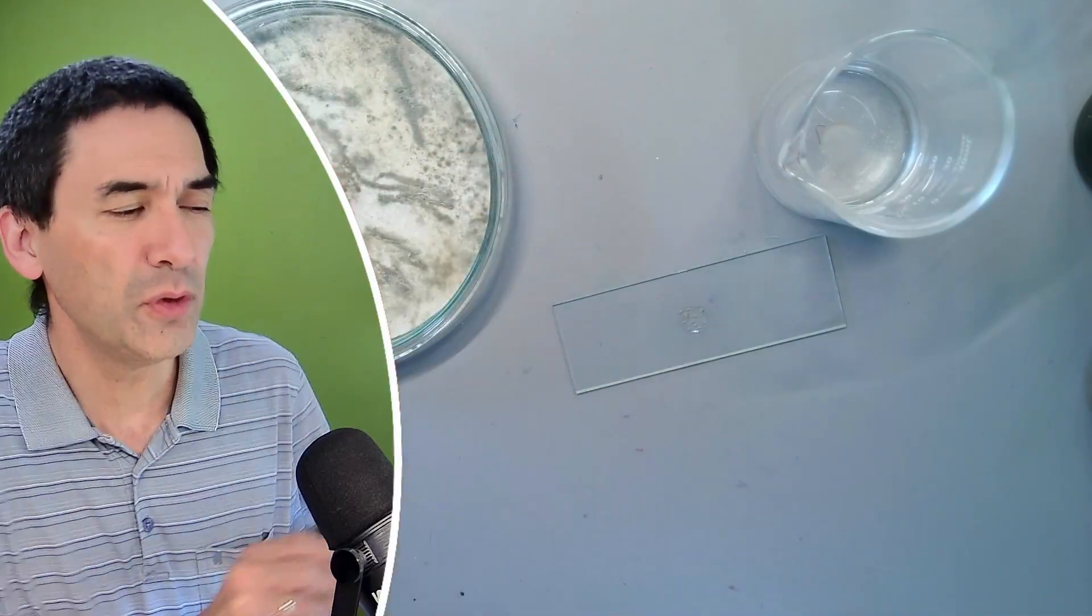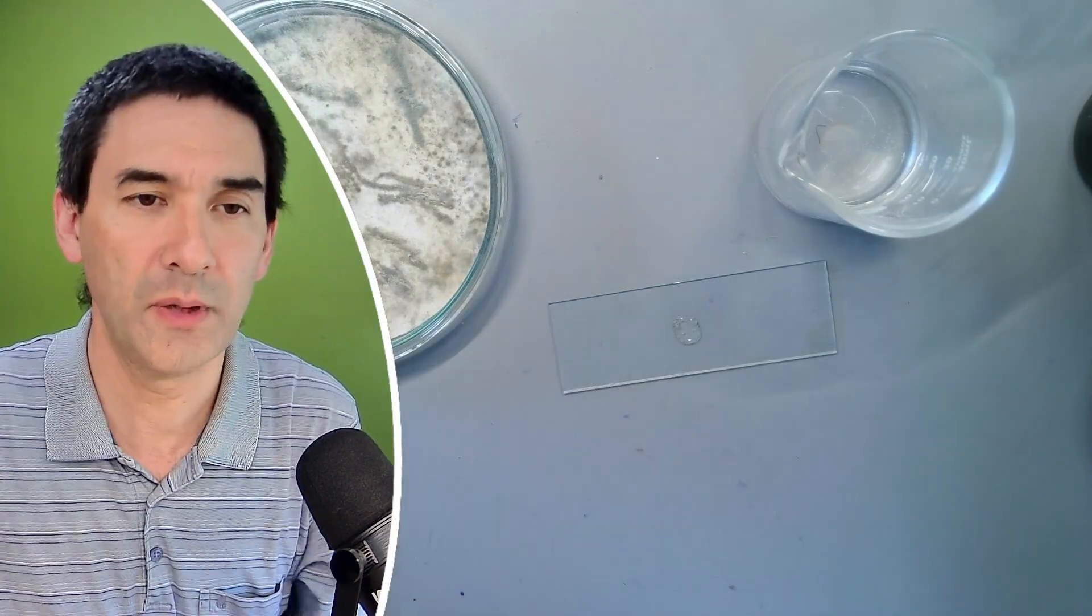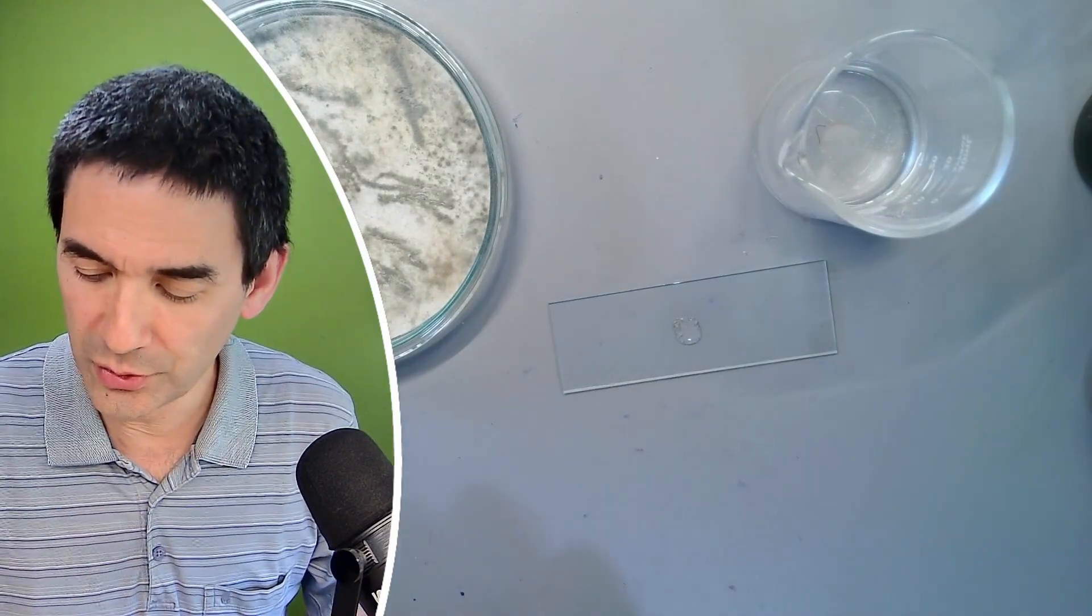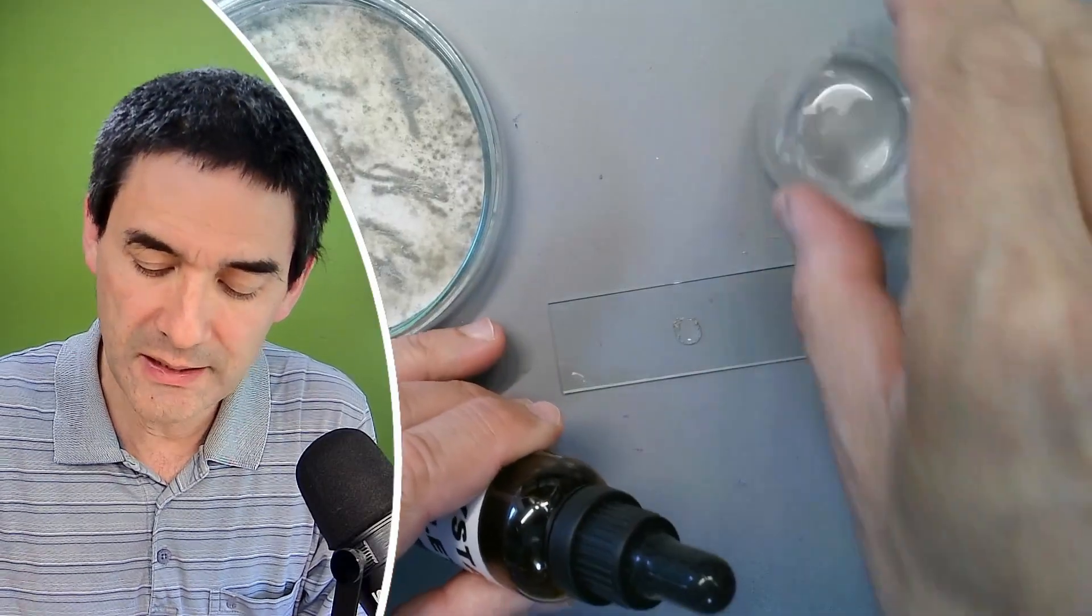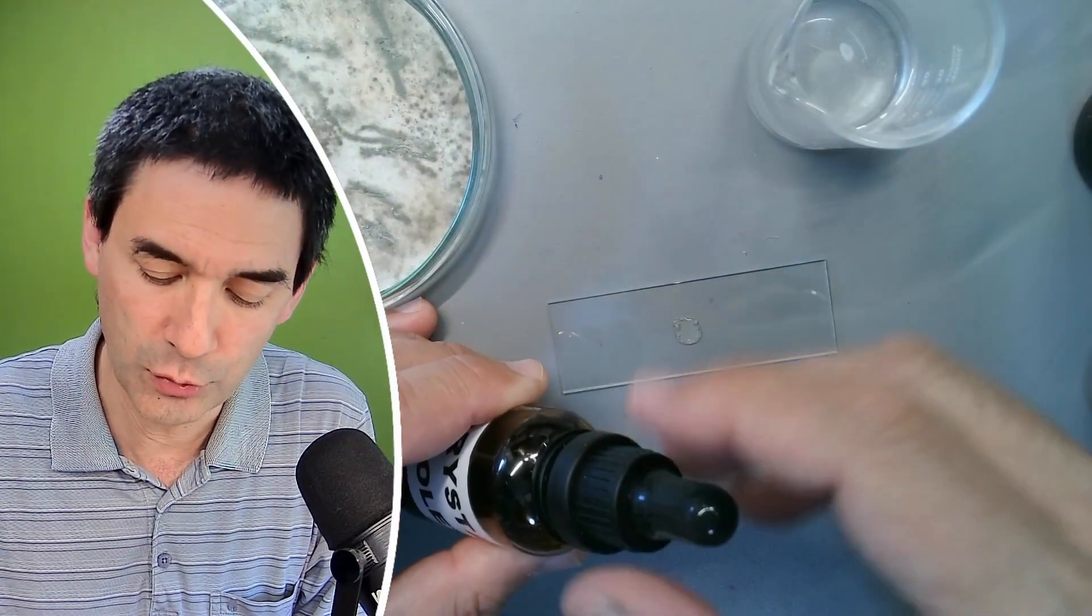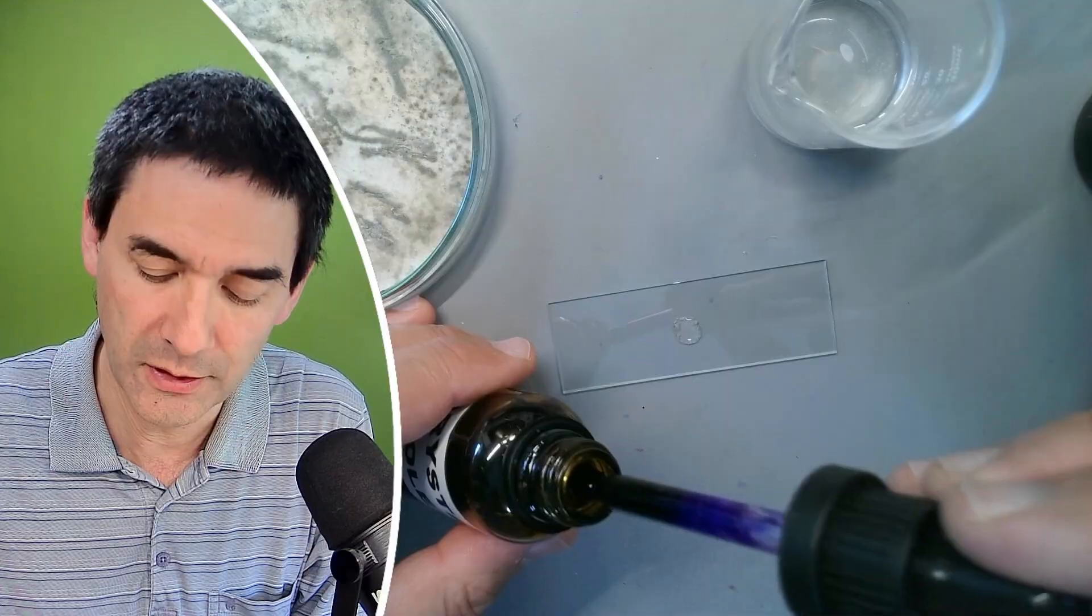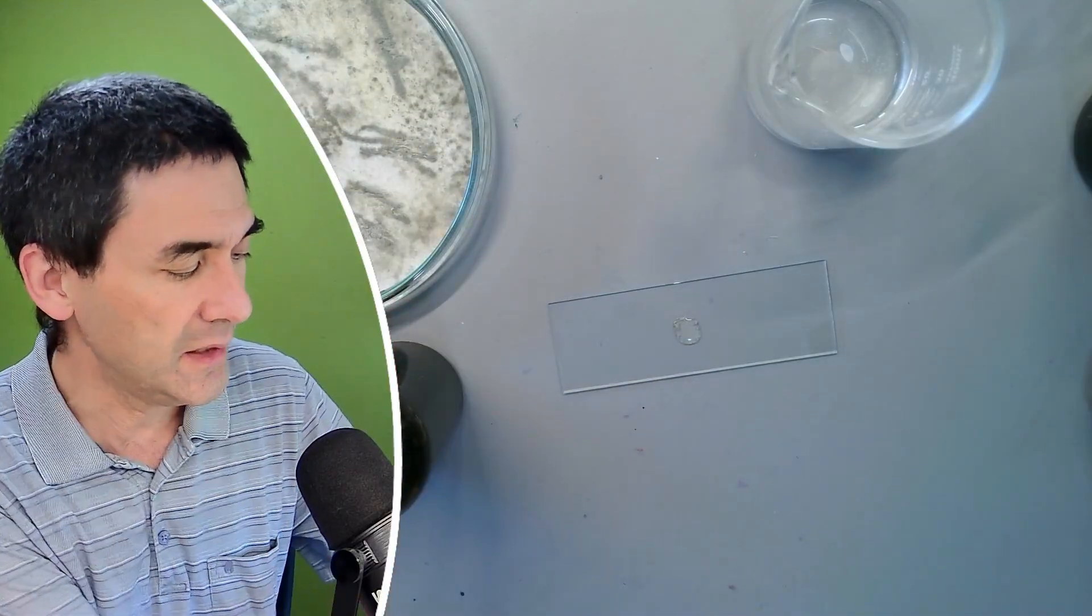And maybe I'm going to add a little bit more water as well. Otherwise it's going to be too little. So now to the crystal violet. Maybe just applying a drop here might be a little bit too much. So I'll use a pipette again, to take a very small amount.